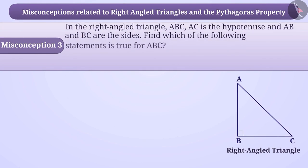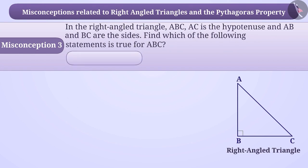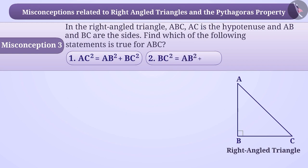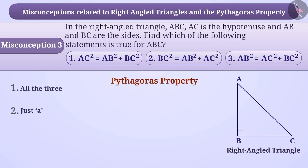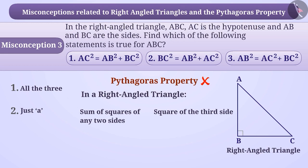Misconception 3: In the right-angled triangle ABC, AC is the hypotenuse and AB and BC are the sides. Find which of the following statements is true for triangle ABC. Statement 1: AC square equals AB square plus BC square. Statement 2: BC square equals AB square plus AC square. Statement 3: AB square equals AC square plus BC square. Children do not understand the Pythagoras property properly. They think that in a right-angled triangle, the sum of squares of any two sides is equal to the square of the third side. With this understanding, statements 1, 2, and 3 all appear to be correct to them, so they give the answer as option 1, but this is an incorrect understanding.